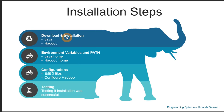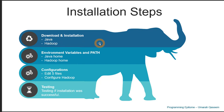First of all, we will download and install Hadoop and its prerequisites. We all know that Hadoop is built upon Java, so first we have to download and install Java. We need to figure out which version of Hadoop we will install and which version of Java is compatible with it. Hadoop 2.6 and earlier requires Java 6, Hadoop 2.7 and later requires Java 7, while Hadoop 3.0 and later requires Java 8.